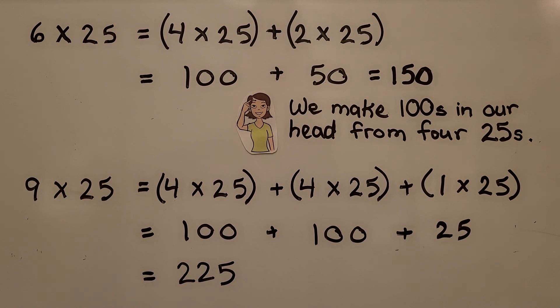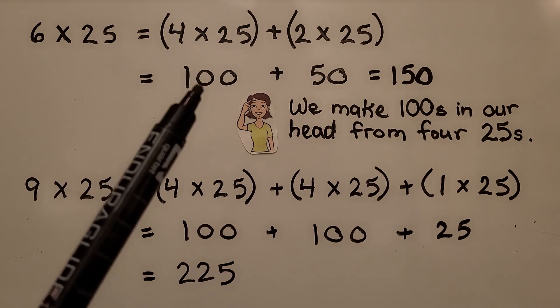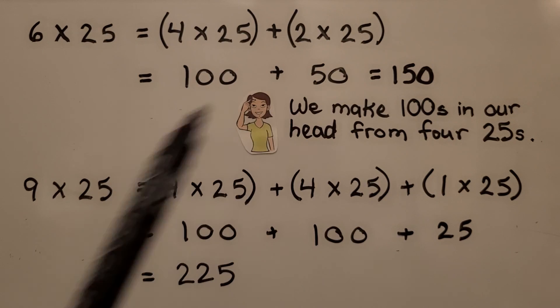If we had to find six 25's or six times 25 or 25 times six, we can think that four 25's make 100. Four times 25 is 100. We still have two left over. That's going to make 150.